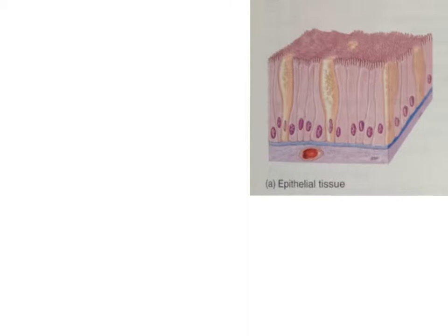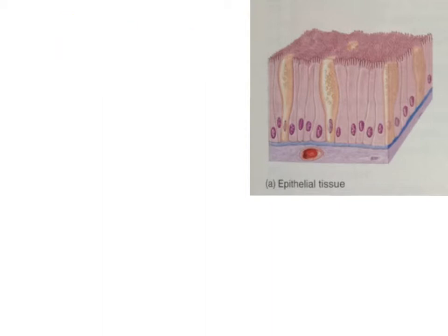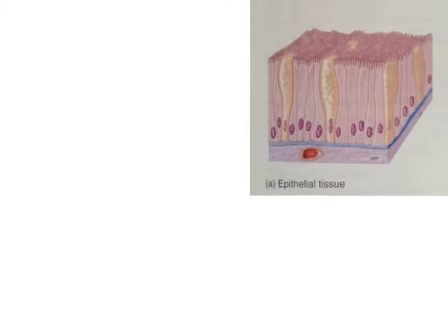In addition, because it is often secretory, epithelial tissue also makes up the structure of the body's glands. Epithelial tissue promotes interaction between the external environment and the internal environment of the body. These tissues are critically important to physiology because chemical substances must pass through them before they enter into the blood.